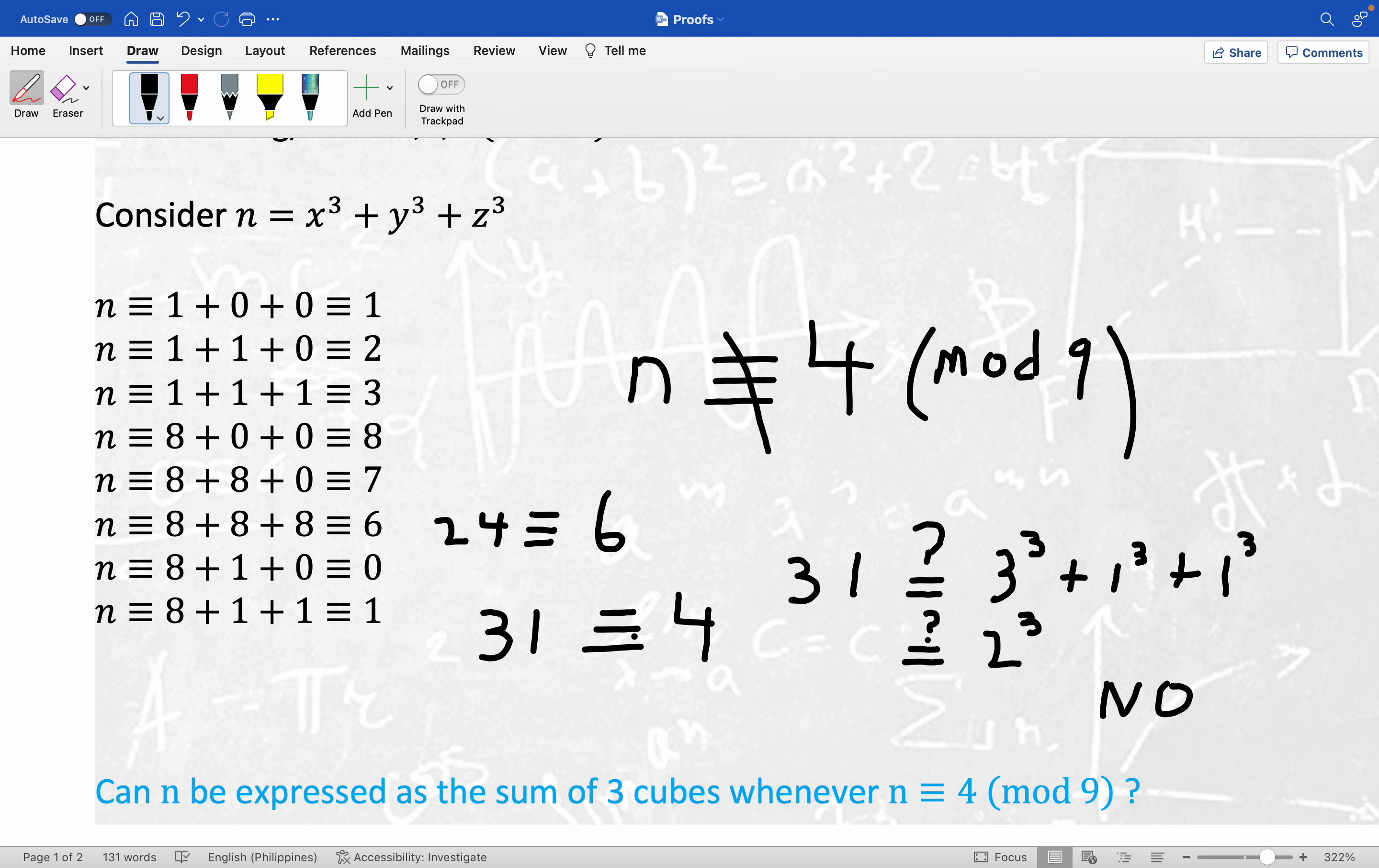Now, I didn't go through every possibility, I guess, but it's pretty convincing that if 31 is congruent to four, 31 cannot be represented as the sum of three cubes. So that wasn't a super convincing proof, but any number at all that is congruent to four cannot be written as the sum of three cubes. Hope you enjoyed.